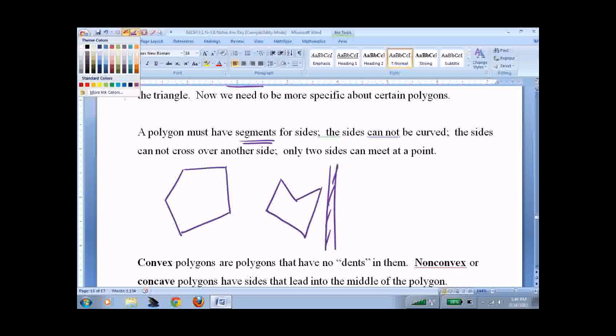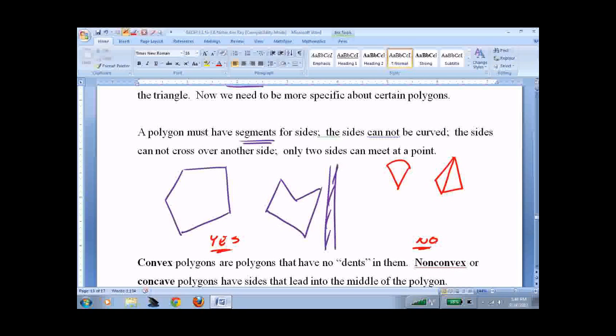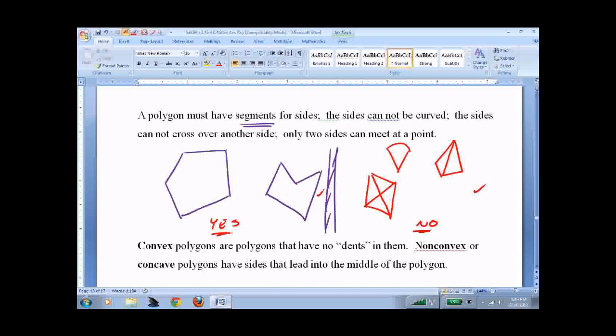Not a polygon would be things with curves, things where we have an extra line in there, things where lines cross over. So none of those are polygons. This is kind of obvious. I'm not too worried about this. I think you'll handle this, no problem.